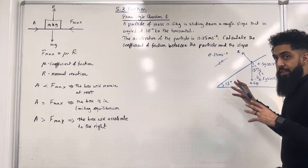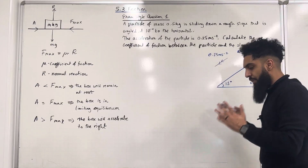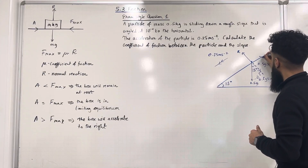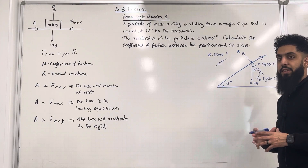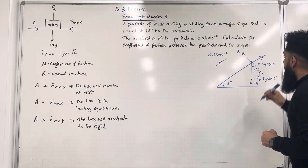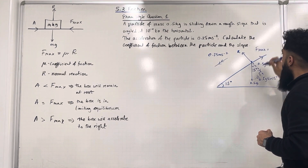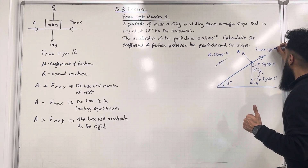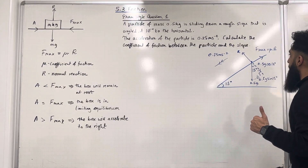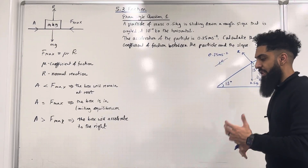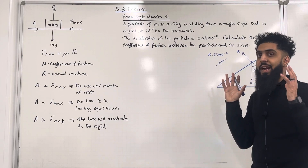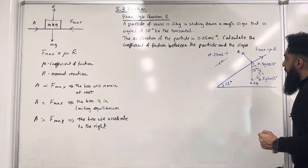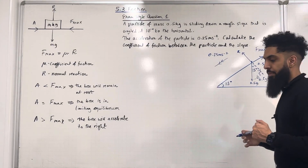This slope is rough. Because the acceleration is down the slope, friction will be acting up the slope, and that friction is F max. F max equals mu multiplied by the normal reaction R. Always remember: when the particle is accelerating, the friction is always at its maximum, so you can label it as mu R. Our target is to work out mu.